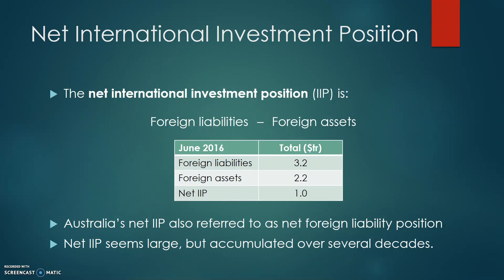One way to describe Australia's overall position when it comes to foreign investment flows is the net international investment position, or IIP. The way we calculate the IIP is by taking foreign liabilities and subtracting foreign assets. So the equation is: foreign liabilities minus foreign assets equals the net international investment position.